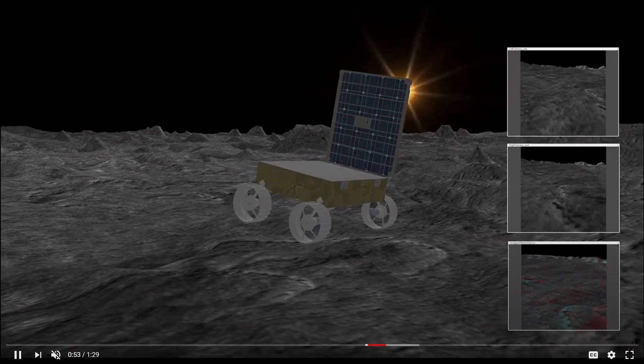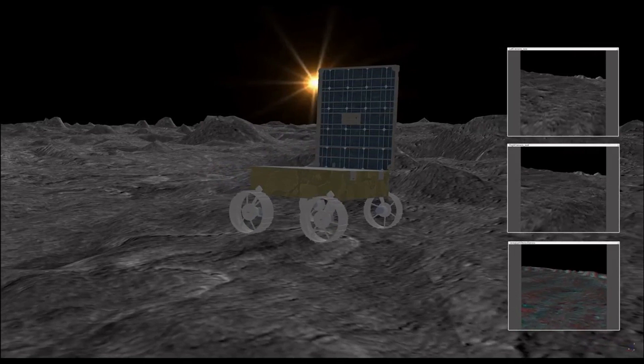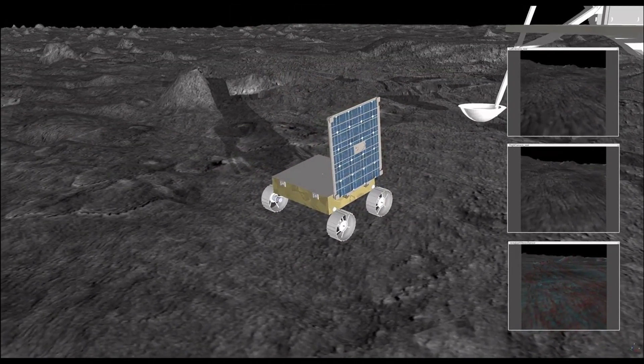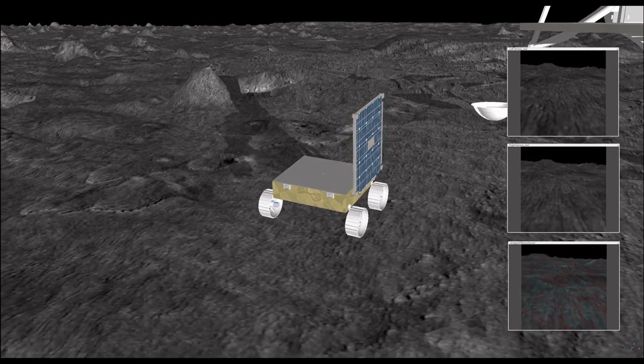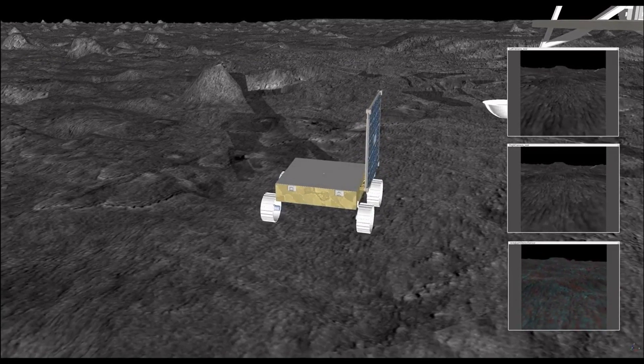Moonranger will be the first to rove a lunar pole. It is pushing boundaries of miniaturization, autonomy, and operation in darkness. Moonranger is pioneering a class of high-performance micro-rovers that will contribute immensely to the future of planetary exploration and enterprise.